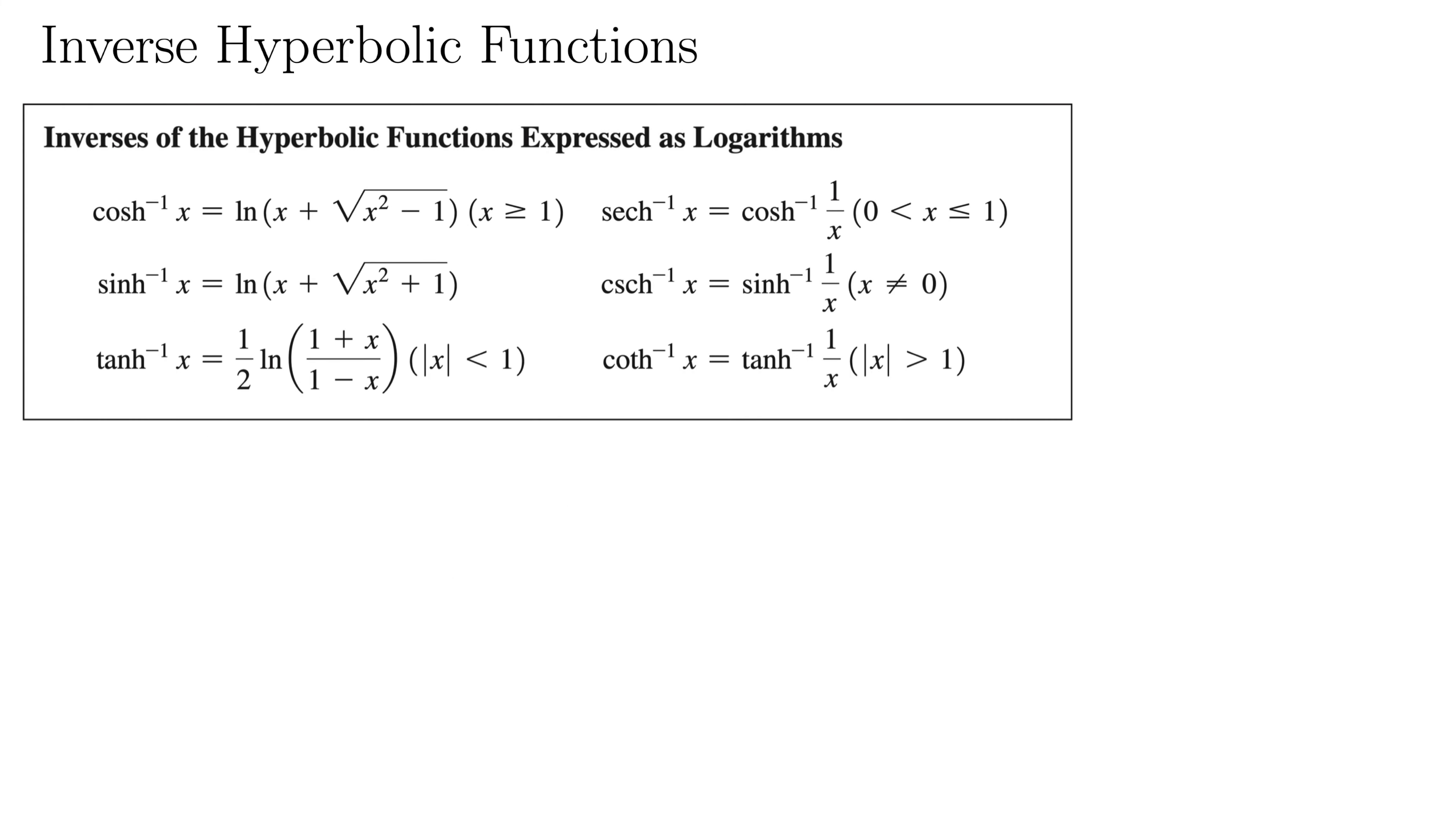So just like we had the e representations of our hyperbolic functions, for instance cosh was e to the x plus e to the minus x all over 2, for our inverse hyperbolic functions we have these natural log representations. And again, we're really getting into the weeds here. So I wouldn't expect you to have these memorized, but just know that they exist and maybe try working with them a little bit.